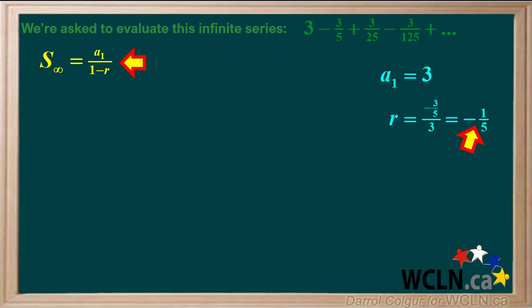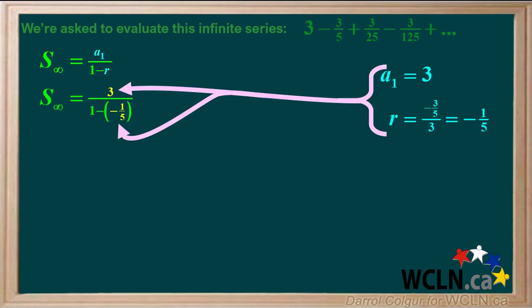So, we'll start with the equation for the sum of a convergent series. We'll substitute 3 for a1 and negative 1 fifth for r.